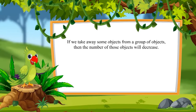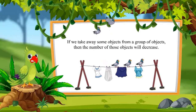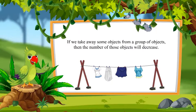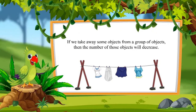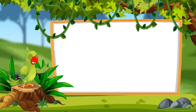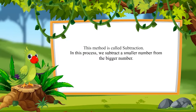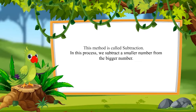In this way, if we take away some objects from a group of objects, then the number of that object decreases. Do you know what this method is called? This method is called subtraction. In this process, we generally subtract a smaller number from the bigger number.